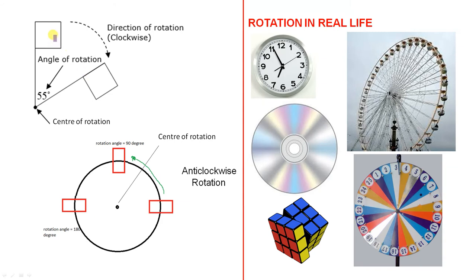Over here we have a simple flag, and that's been rotated in that direction. The direction of rotation is clockwise. The angle of rotation is 55 degrees, and there's the centre of rotation. Just pretend that's a flag, and the centre of rotation is right at the end of the stick.